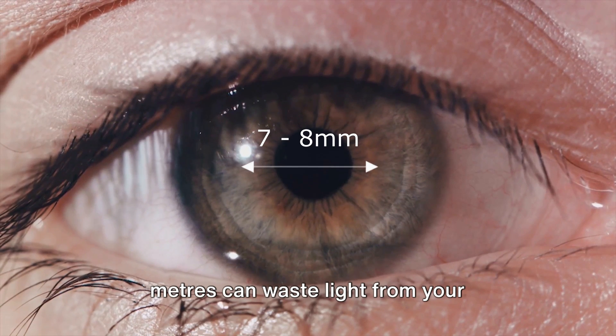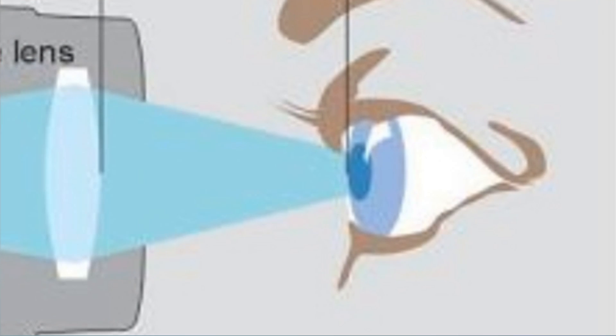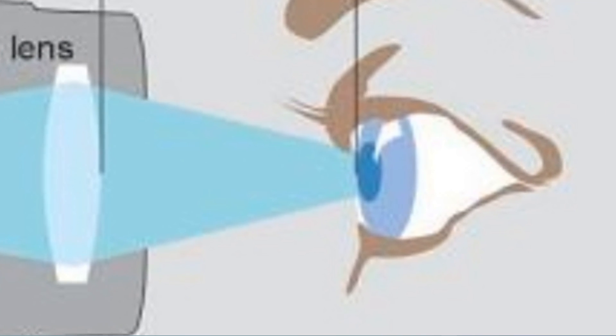Anything above seven to eight millimeters can waste light from your telescope, as the light cone can't fit inside the pupil of the human eye.